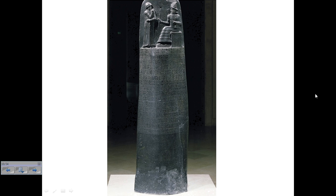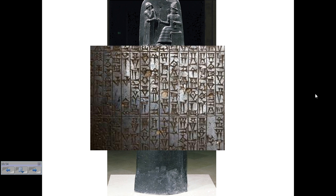This is something we'll be dealing with in class — this is called Hammurabi's Code, and it was the first written code of laws. If you look on the stone, little words are written in there and they give the rules and laws for ancient Babylon. This is an example of some of the codified laws, and we're going to take a very close look at these laws tomorrow in class.